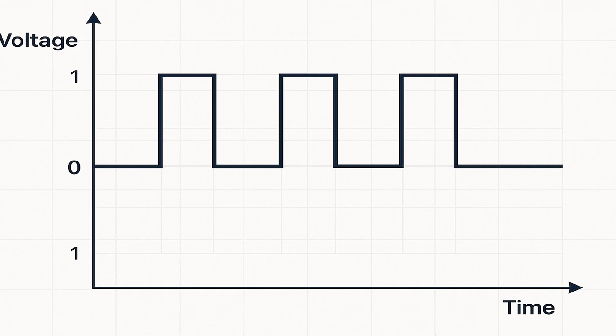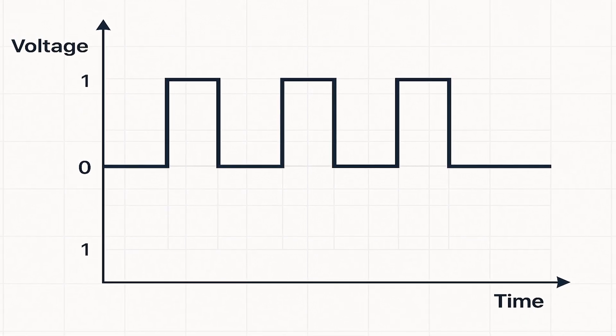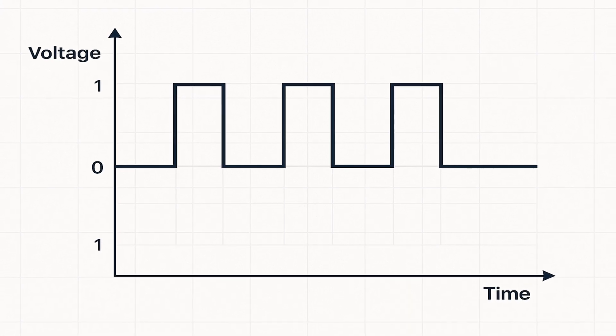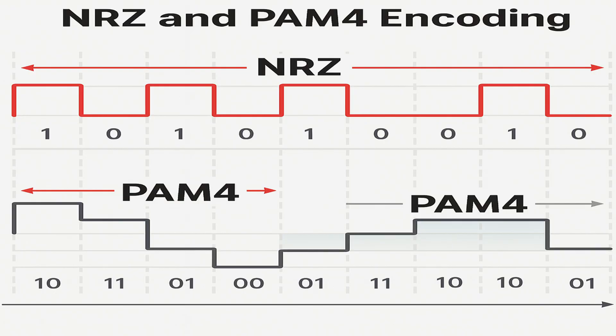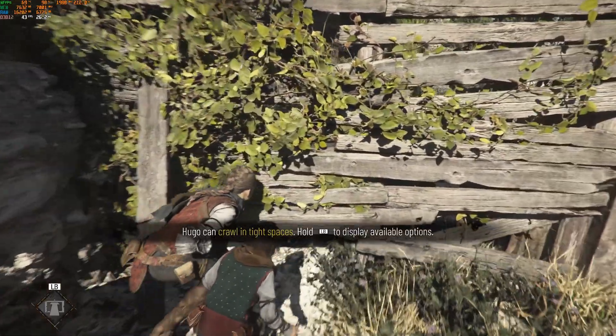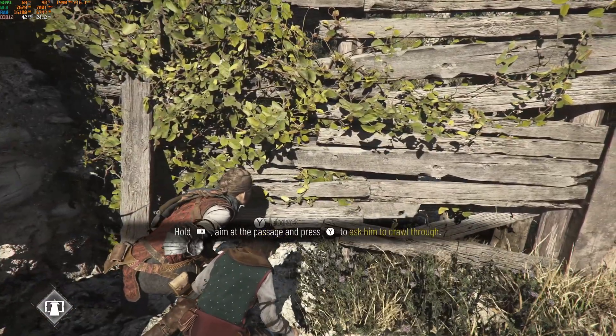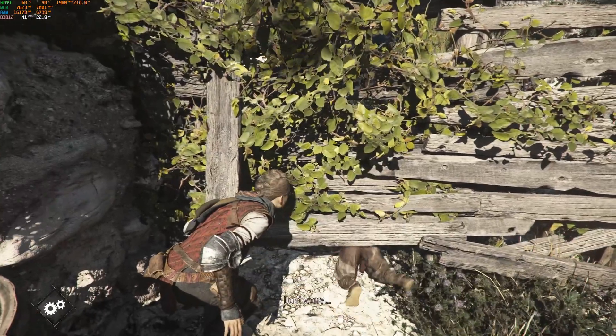Imagine two friends talking using flashlights. GDDR6 uses a flashlight that's either on or off — very simple. A flash of light means one, no light means zero. But GDDR6X tries to say more by using four different levels of brightness instead of just on or off. So instead of saying just one or zero, it says super dim, dim, bright, and super bright — which translates to 00, 01, 10, or 11. That means it can send twice the amount of information in the same amount of time. But if the flashlight flickers, the message gets scrambled.